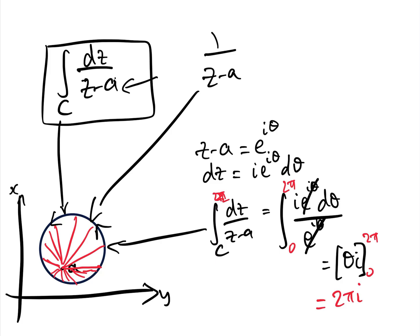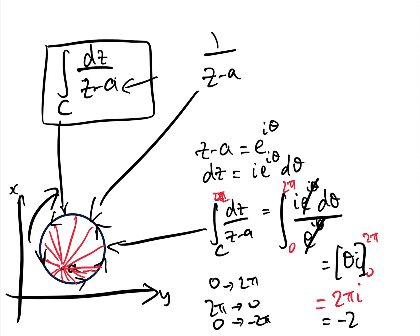If we go clockwise instead of anticlockwise, instead of going from zero to two pi, we go from two pi to zero, or zero to minus two pi, and therefore the answer is minus two pi i. That is simply a convention.